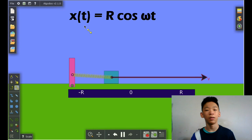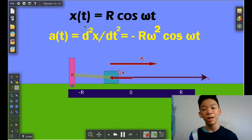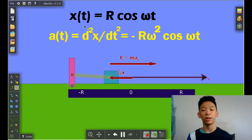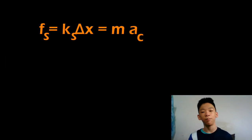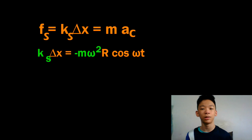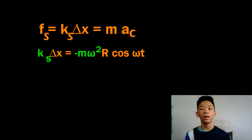To get acceleration, we take the rate of change of position with respect to time twice, giving negative r omega squared cosine(omega t). Because the acceleration and displacement face opposite directions, the acceleration is proportional to the restoring force of the spring. Since the spring force is given by f_s equals k_s times delta x, and also equals mass times acceleration — which is negative r omega squared cosine(omega t) — we can see that delta x equals r cosine(omega t) and the spring constant k_s equals negative m omega squared.